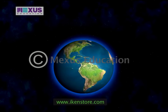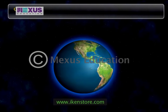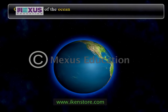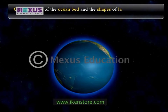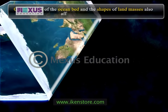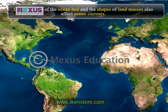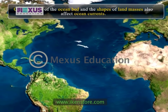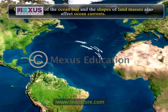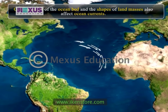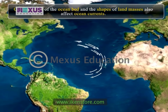Other factors affecting currents are the configuration of the ocean bed and the shapes of land masses. For example, in the Atlantic Ocean the North Equatorial Current flows towards the West Indies. Most of the current is channeled into the Gulf of Mexico, where it bears north-eastward, bursting into the Atlantic Ocean between Florida and Cuba as the Gulf Stream.